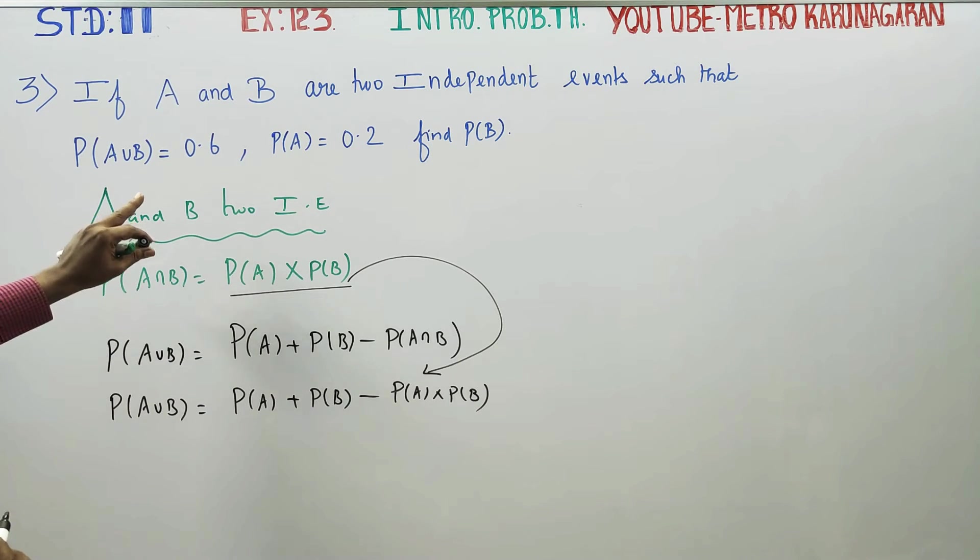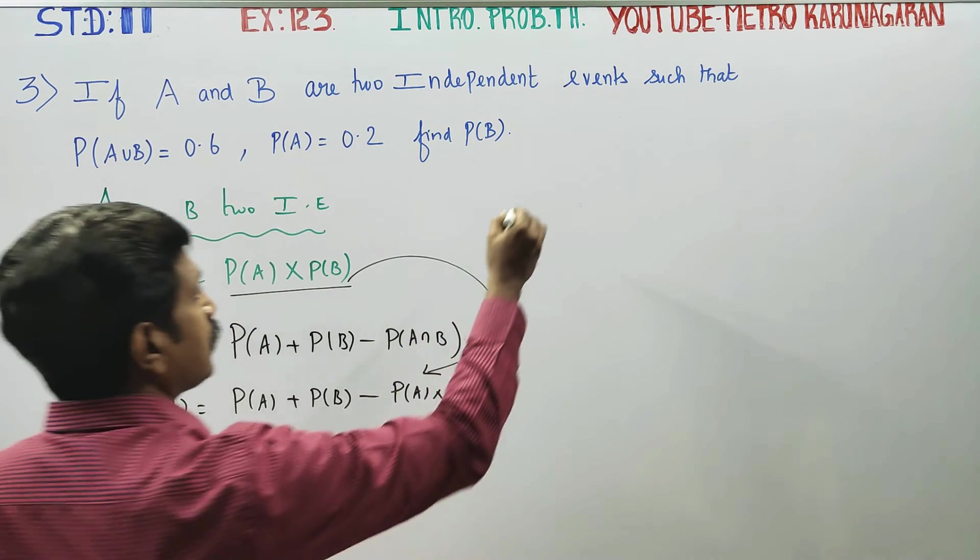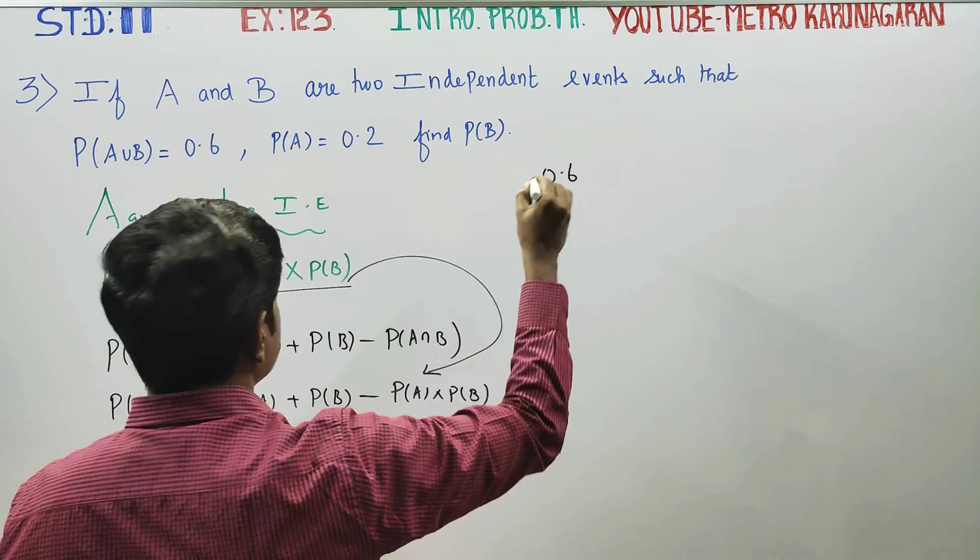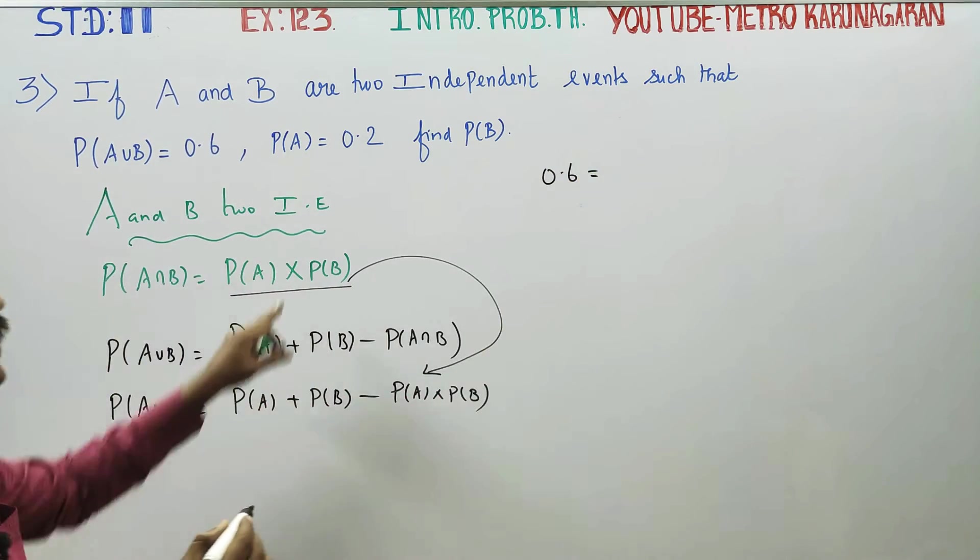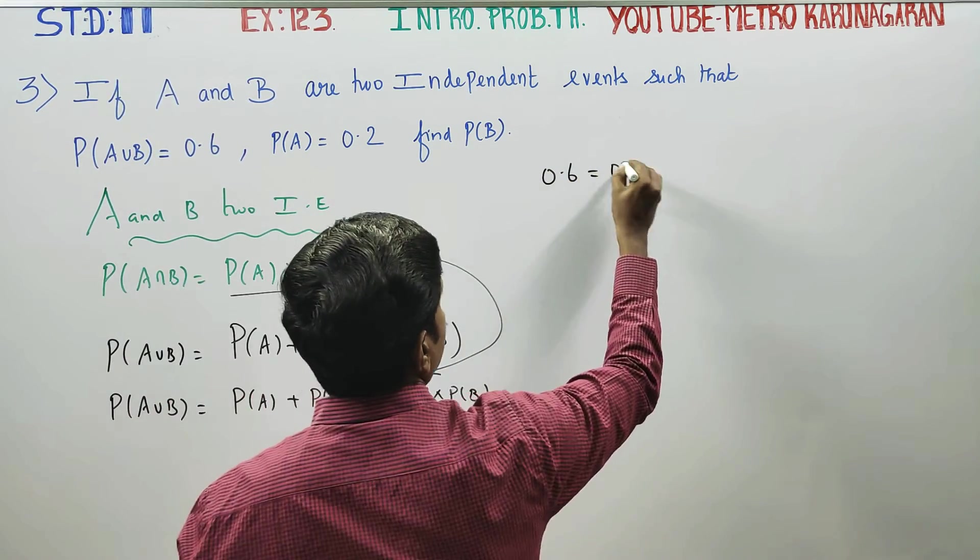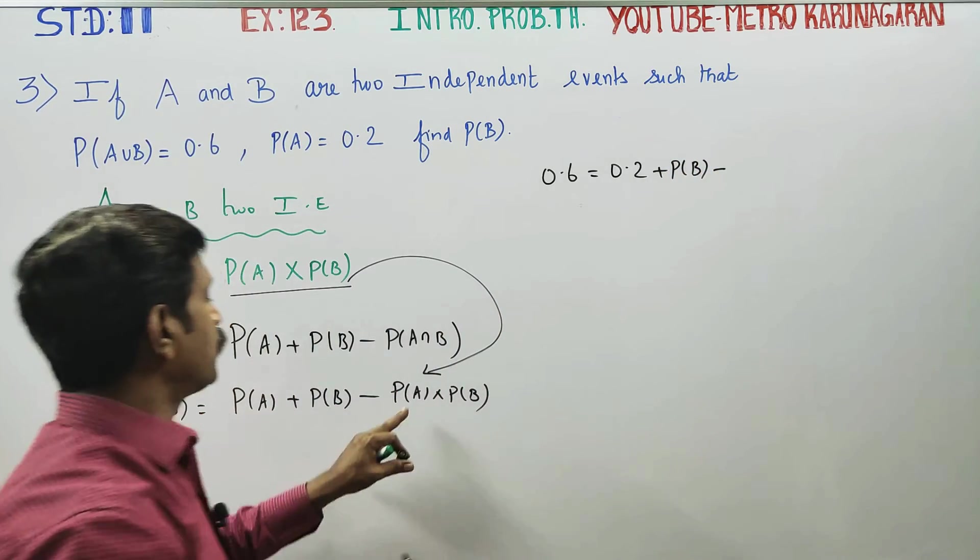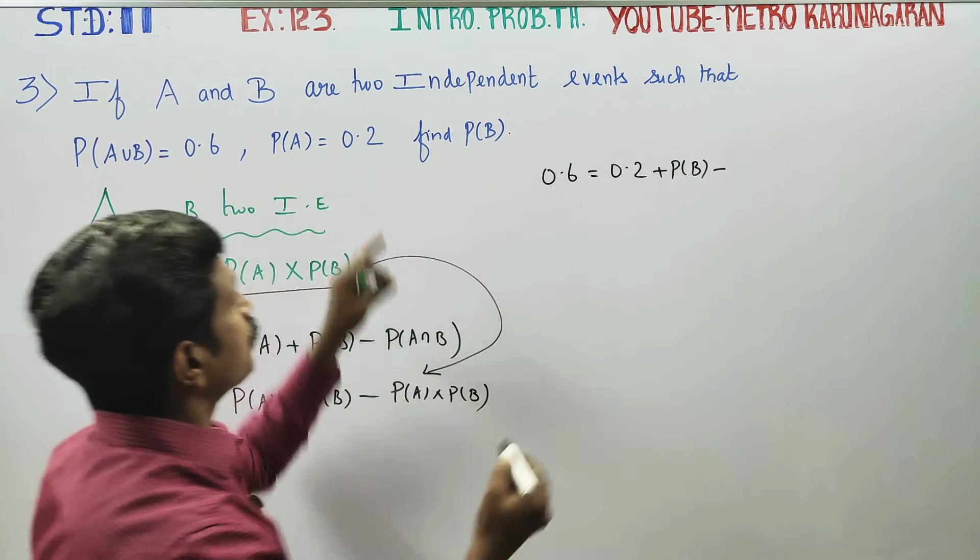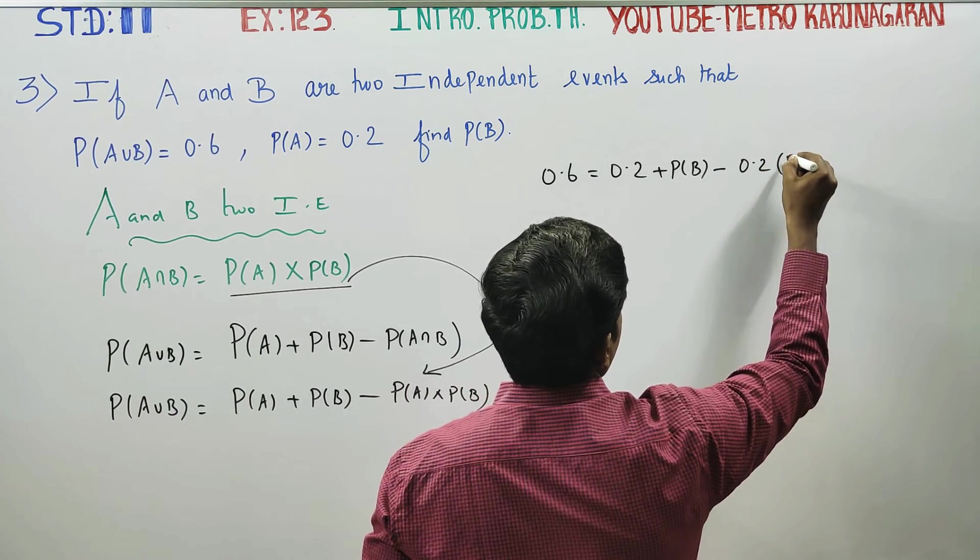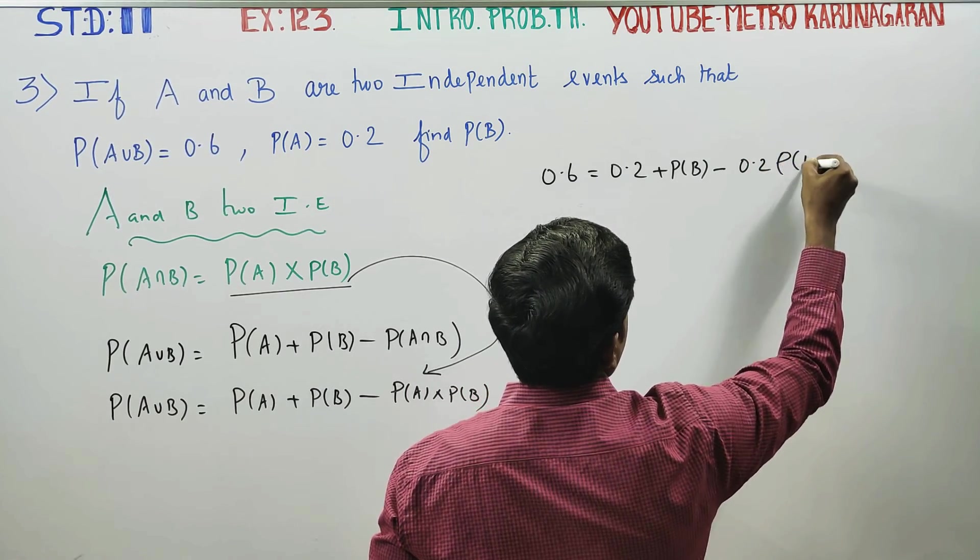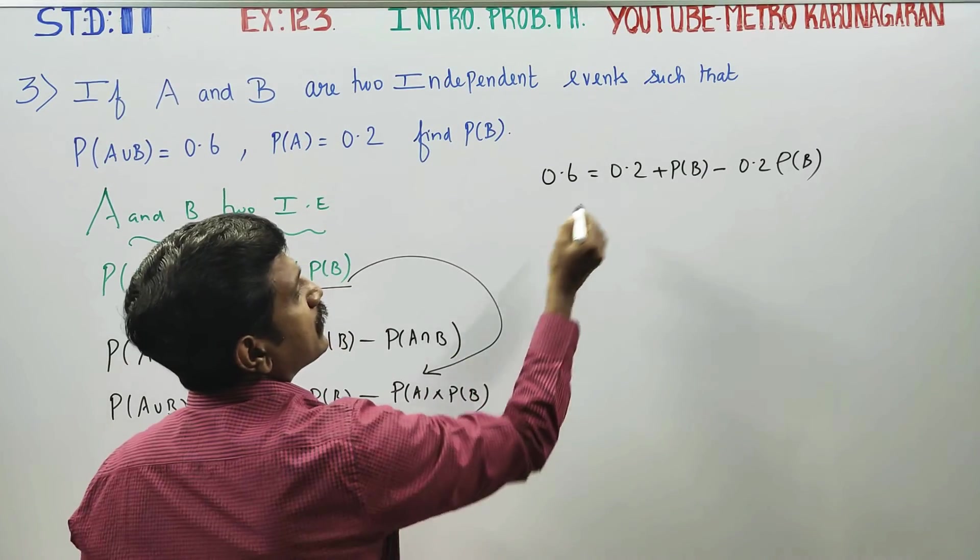Now substituting the values: probability of A union B value 0.6 is equal to probability of A value 0.2 plus probability of B minus probability of A value 0.2 into probability of B.